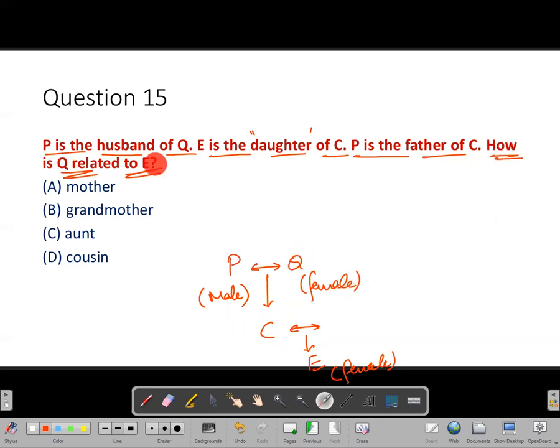The question is how is Q related to E? Q will be the grandmother of E. So for this question, option B is the answer.